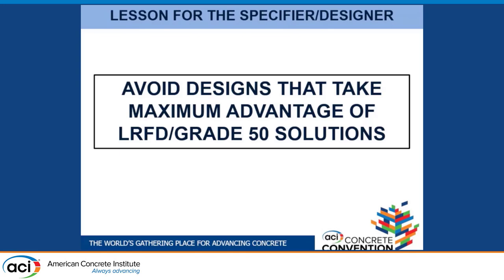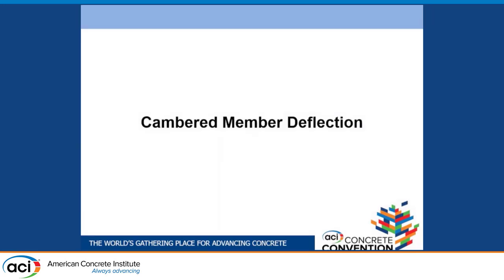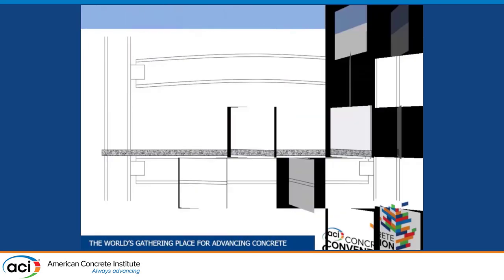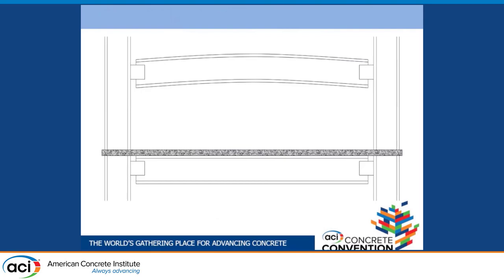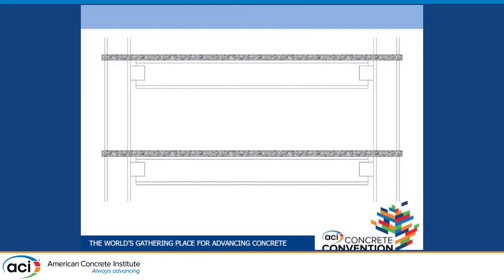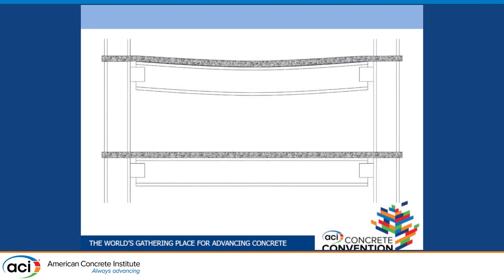The lesson here for the designer is not to take full advantage of LRFD design solutions. Remember deflections — anyone remember Darryl Royal? University of Texas football coach who ran the wishbone offense. He said three things can happen when you throw a forward pass, and two of them are bad. That's pretty much the same story for cambered members. You can end up with residual camber, with members that deflect down to a level position, or with over-deflection.